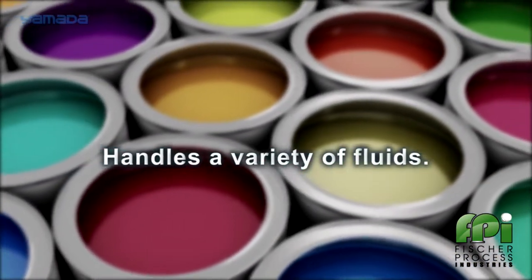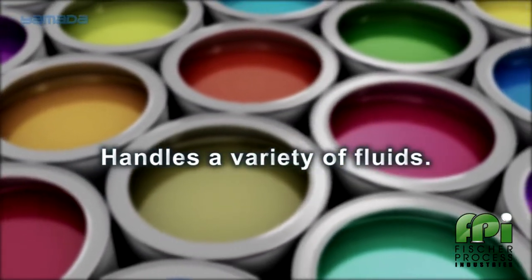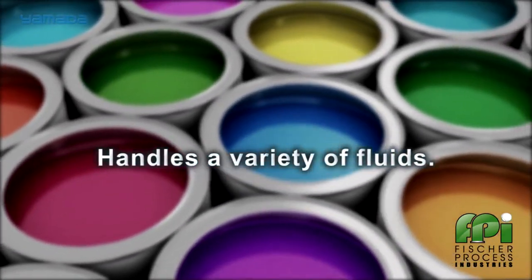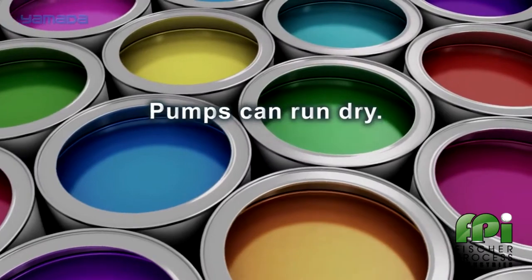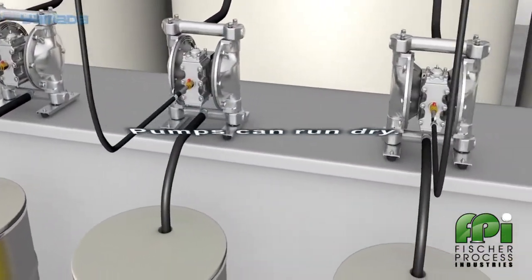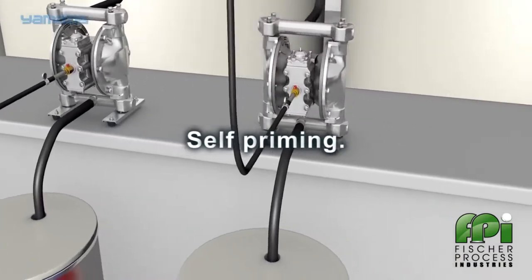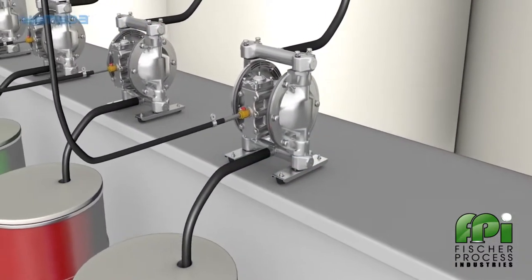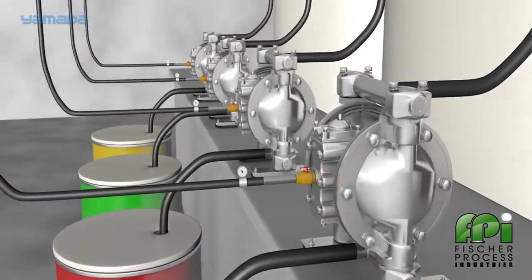Yamada pumps have no close fitting or rotating parts, allowing the pump to handle a variety of fluids with high solids content. The air-powered motor also allows the pumps to run dry without serious or extensive damage, enabling the pumps to be self-priming. Our precision tolerances on the check valves also facilitate a high suction lift even at dry startup and with heavier fluids.